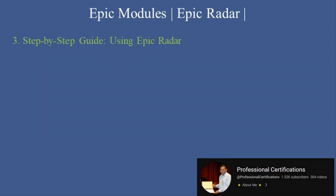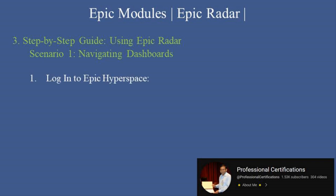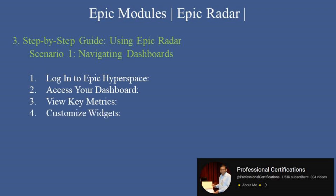Step-by-step guide for using Epic Radar. Scenario 1: Navigating dashboards. Step 1 — log in to Epic Hyperspace and navigate to the Radar module from your Hyperspace dashboard. Step 2 — access your dashboard by selecting a pre-configured dashboard or creating a new one based on your role and needs. Step 3 — view key metrics such as patient throughput, scheduling efficiency, or revenue performance. Step 4 — customize widgets by adding or adjusting them to display data that aligns with your priorities.